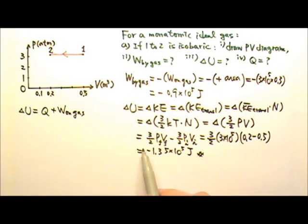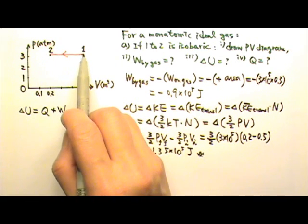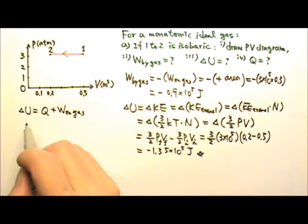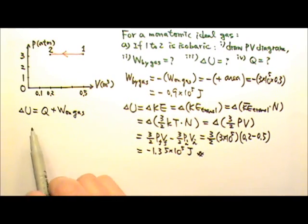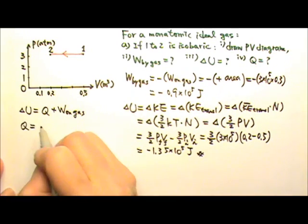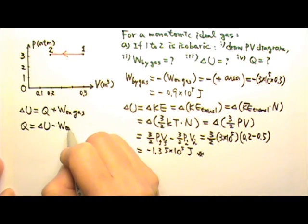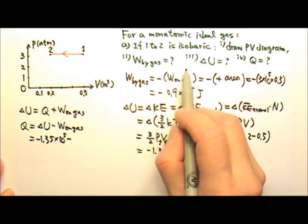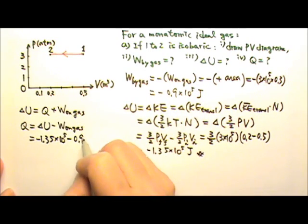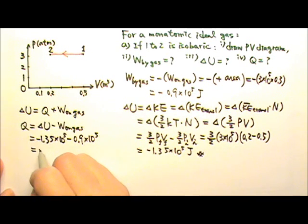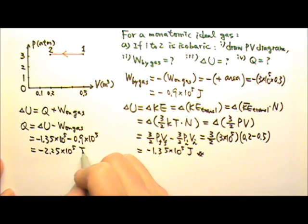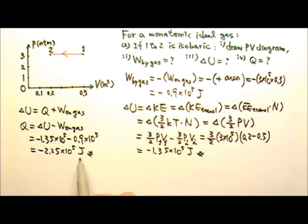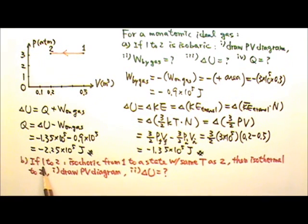Since ΔU is negative, the internal energy decreases and the temperature decreases, which matches our expectation because PV decreases. Now we can find Q using the first law: Q = ΔU − W_on = −1.35×10⁵ − (−(−0.9×10⁵)). The work done on the gas is +0.9×10⁵, so Q = −1.35×10⁵ − 0.9×10⁵ = −2.25×10⁵ joules. Since Q is negative, heat is actually removed from the gas.